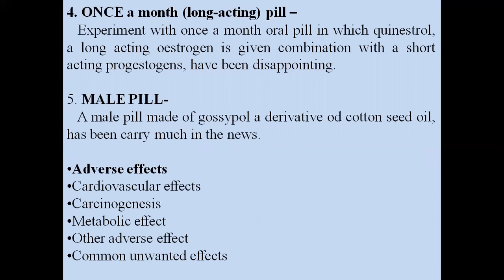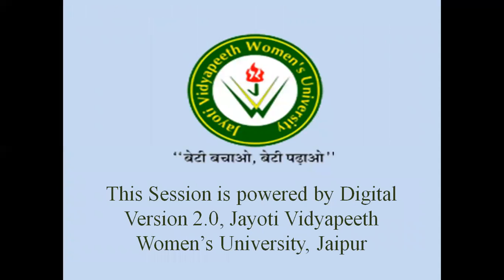The once-a-month pill experiments with quinestrol, a long-acting estrogen given in combination with a short-acting progesterone, but results have been disappointing so it is rarely used. The male pill is made of gossypol, a derivative of cottonseed oil, which has received much attention. Adverse effects of hormonal contraceptives include cardiovascular effects, carcinogenesis, metabolic effects, and other common unwanted effects.